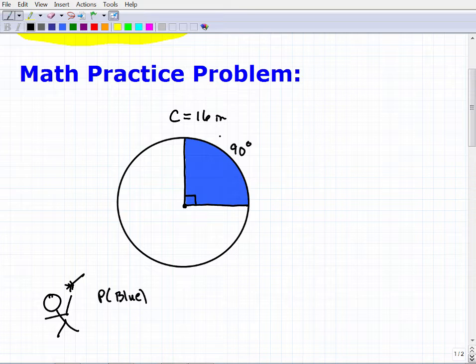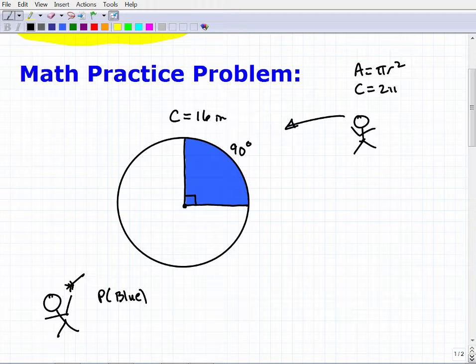All right, so when you approach a math problem, obviously the more math you know, the better off you're going to be. Because you have two types of, you have a decision here. When you look at the problem, you're like, oh, okay, I see circumference. I know these formulas, area equals pi r squared, circumference equals 2 pi r.